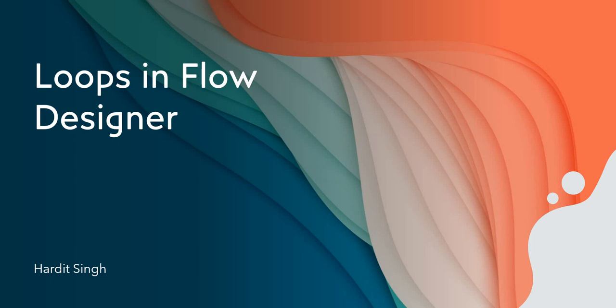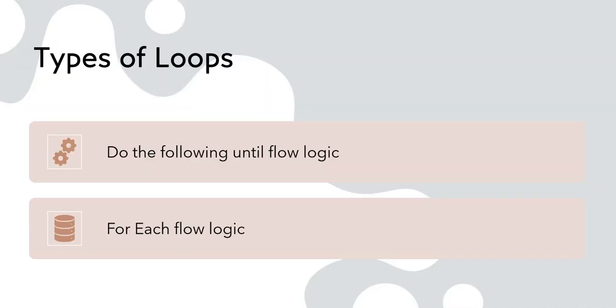If you haven't subscribed to my channel yet, please go ahead and subscribe and don't forget to hit that like button. There are broadly two types of loops present in flow designer: the first is 'Do the Following Until' flow logic, and the second is 'For Each' flow logic. We will be using both loops using the flow logics of flow designer.